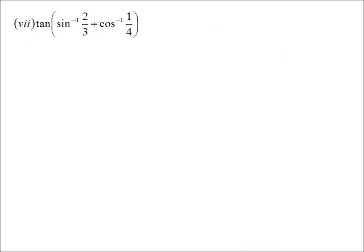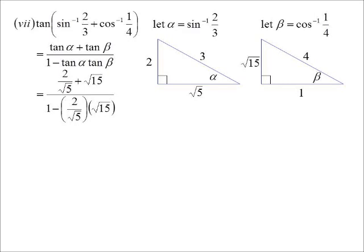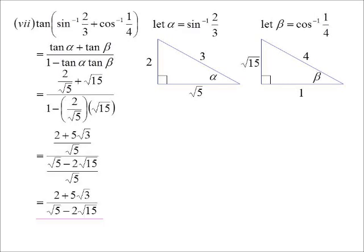The tan of the inverse sine of 2 thirds plus the inverse cos of a quarter. Again, these are just angles. So this is like saying, what is the tan of alpha plus beta? Now alpha and beta are in different triangles. Don't try and fit them into the same triangle. We're talking about two different angles here. So I'm going to call alpha inverse sine of 2 thirds and put that in a triangle. There we go. And then I'll call beta inverse cos of a quarter. I'll put that in a triangle. So we've got adjacent over hypotenuse. Alright. So now I can go tan plus tan on 1 minus tan tan. Read off my triangles. Substitute in. Tidy it up. And eventually, I didn't bother rationalizing the denominator, but 2 plus 5 root 3 on root 5 minus 2 root 15 for that one.